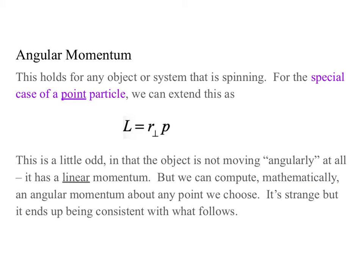The statement L equals I omega holds for any system or object that is spinning. But in the special case of a point particle, we can also extend this as L equals R perpendicular times P, where R perpendicular is the moment arm associated with the line of action of the linear momentum of that point particle. This is a little odd, in that the object is not really moving angularly at all — it has a linear momentum — but we can compute mathematically the angular momentum about any point we choose.